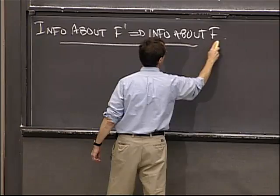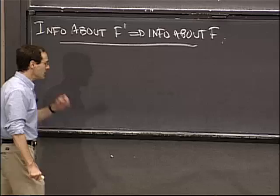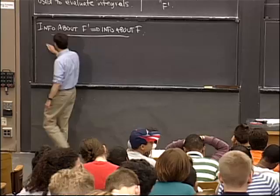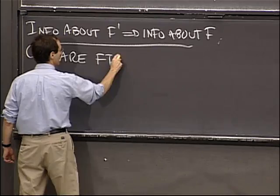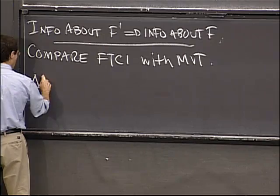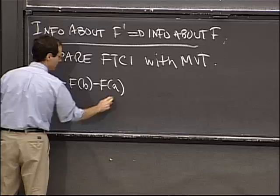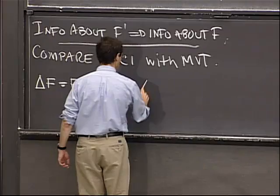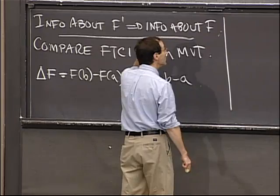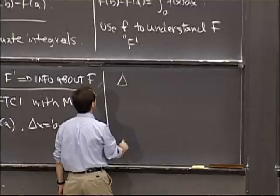Since there were questions about the mean value theorem, I'm going to illustrate this by making a comparison between the fundamental theorem of calculus and the mean value theorem. I'll introduce notation: delta f is f(b) minus f(a), and delta x is b minus a. The fundamental theorem can then be written as a formula for delta f.